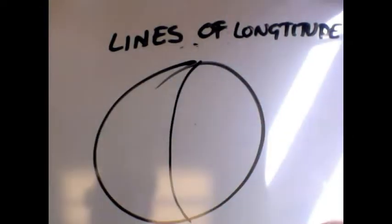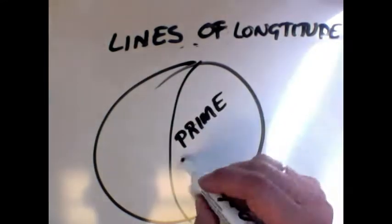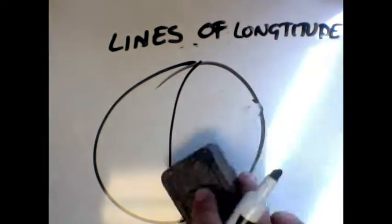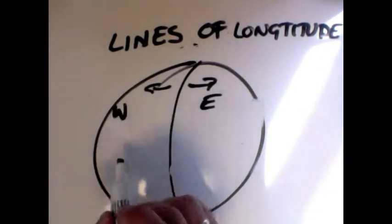The opposite of lines of latitude, or what complements them, is going to be lines of longitude. These go vertically, and the line that divides the east and west is called the prime meridian.